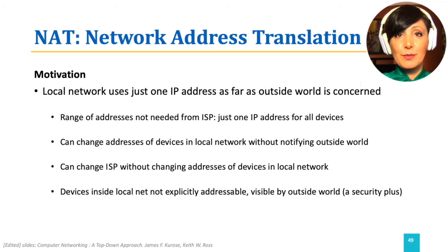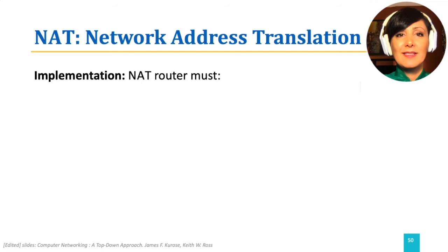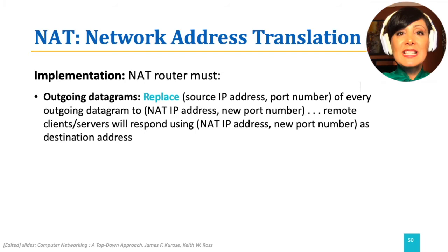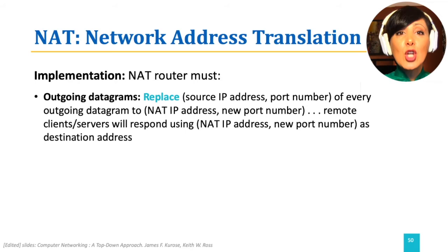How does NAT work? A NAT-capable router uses an address translation mechanism to perform this. On an outgoing datagram, a NAT-enabled router replaces the source IP address and port number with the NAT IP address and a newly assigned port number. The remote hosts on the Internet that are talking to the device behind a NAT will respond using the NAT IP address and this new port number as the destination address.